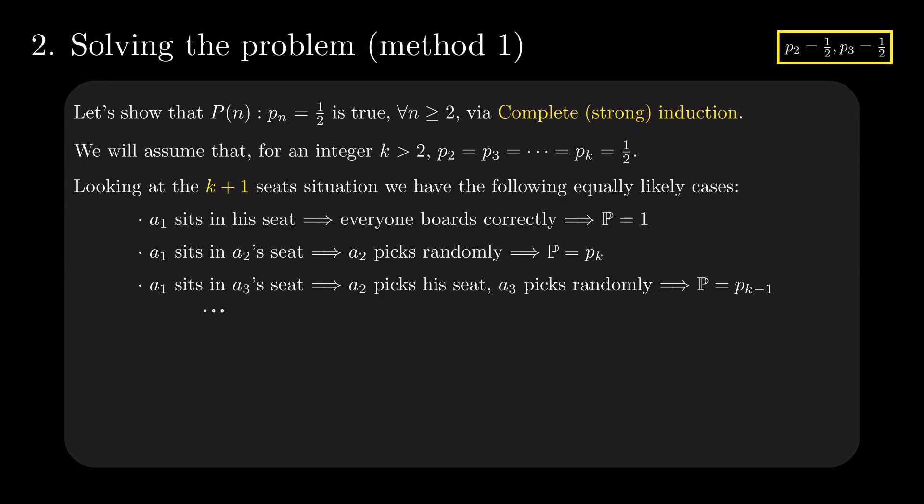We go down the list of passengers, with the second to last being the case when A1 sits in Ak's seat, letting A2 and A3 all the way to Ak-1 to board in their assigned places, and forcing Ak to pick randomly. This results in the final probability on this branch to be P2. And the last case is the one where A1 sits in the last passenger's place, making sure that Ak+1 sits in his rightful position with probability 0.